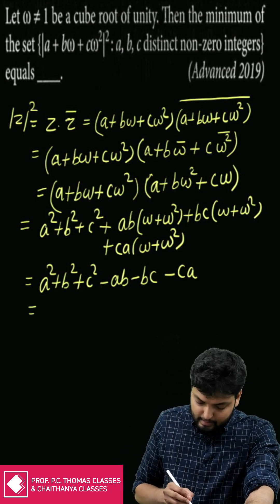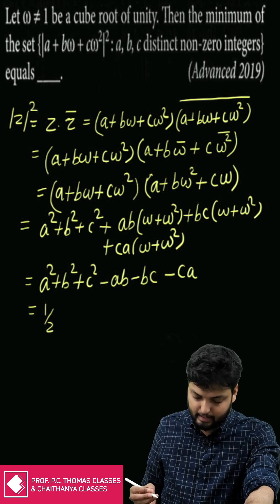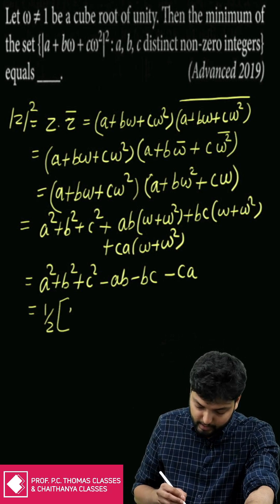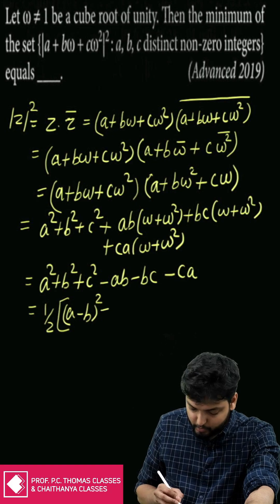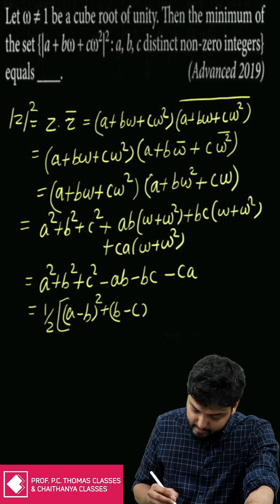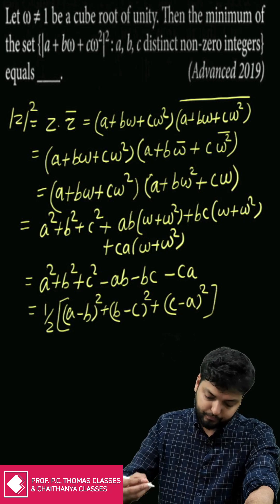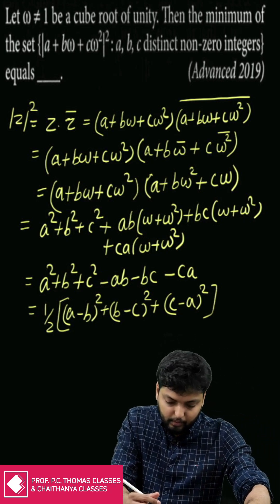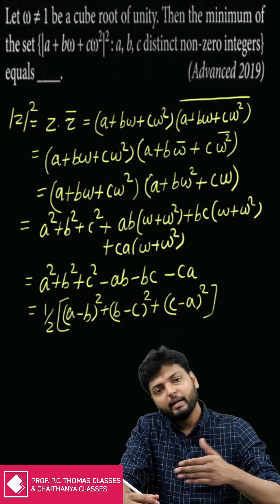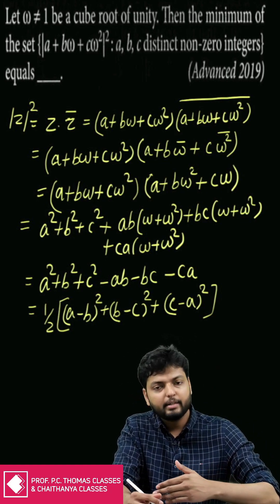This is nothing but the difference of squares, so this can be converted into (a - b)² + (b - c)² + (c - a)².